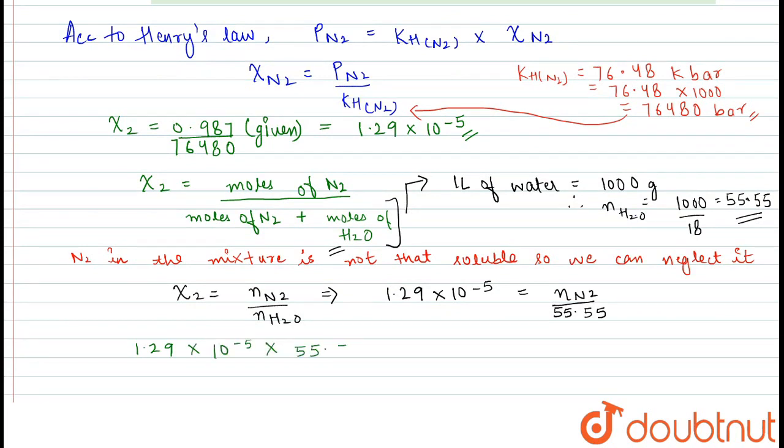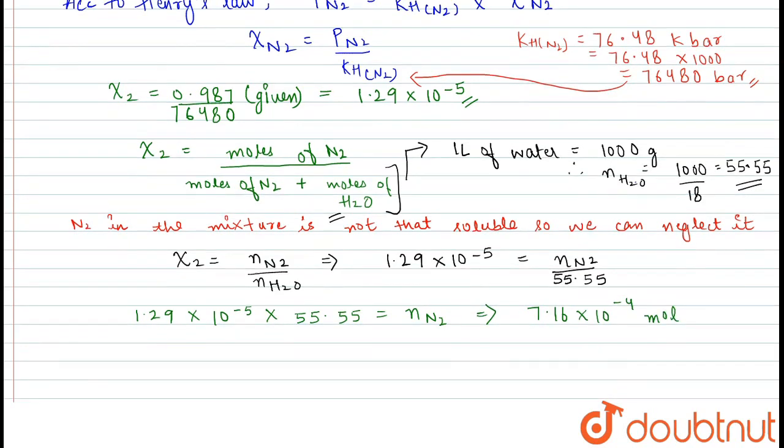So, the number of moles of nitrogen are calculated as 7.16 into 10 raised to the power minus 4 moles. The question asks us to find the answer in millimoles. To get the answer in millimoles, we will multiply the number of moles with 1000 and that is 0.716 millimoles.